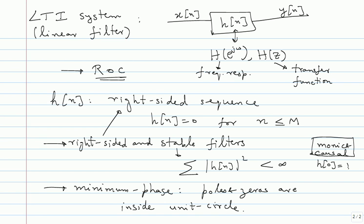The reason for monic is that when you talk about existence of certain filters, existence is guaranteed only up to scaling. So you can multiply by some number and still get another valid signal. When you want to talk about something unique, you say monic just to make it unique. For instance, if I have a filter with a certain frequency response and I scale it by any number, I still get another filter with the same frequency response. Taking the monic version specifies one unique filter.